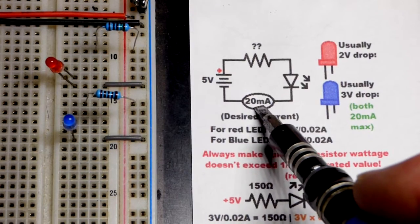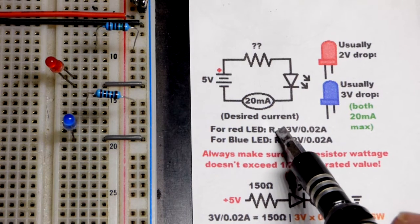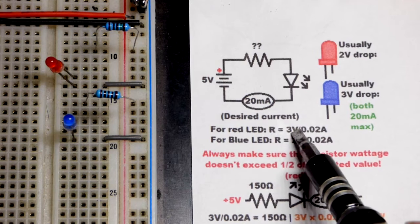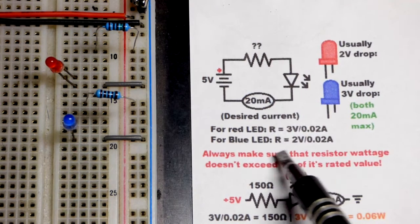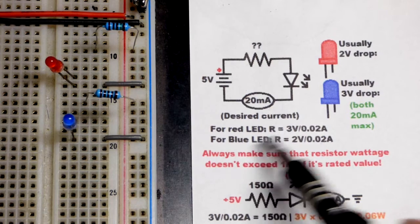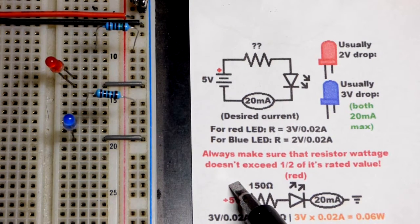Our desired current is 20 milliamps. So to find that resistance we just take the voltage. If it's red it's 3 volts divided by the current we want. For blue, 2 volts divided by the current we want. We do have to make sure the resistor doesn't get too hot. That's covered a lot in other videos.